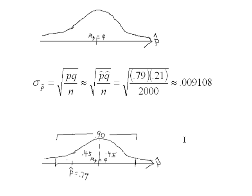We have our sampling distribution of all possible p̂ values in a normal curve. 90% of the time, our p̂ — the value we got from the sample, 0.79 — will land somewhere between the lower and upper bounds of the interval. It doesn't have to land right at the center; it could land anywhere. But 90% of the time it'll be trapped in this interval with the real proportion. We'll finish this problem in the second video on estimation.